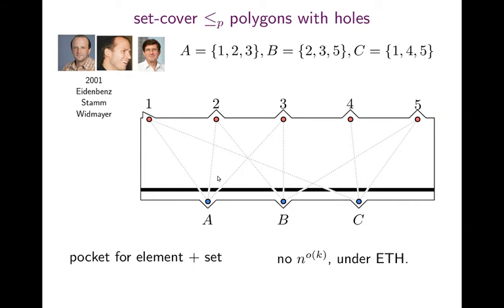Okay, and so since this is a reduction from set cover, this shows W2 hardness and excludes any algorithm of the form n to the little o of k under the exponential time hypothesis. So yeah, so this basically means if you allow holes, then the problem settles, we have these lower bounds already.